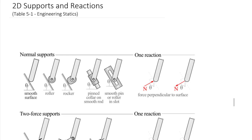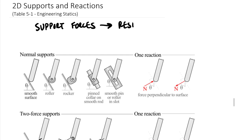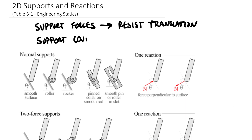As we go through this table and talk about each different kind of support, realize there's a very fundamental relationship between what the physical support is and the kind of reactions that come from it. That physical relationship is based upon two statements: support forces will always resist translation, and support couples will always resist rotation.